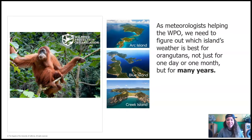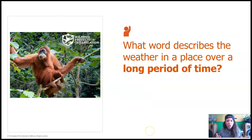Hi, welcome back. As meteorologists helping the Wildlife Protection Organization, we need to figure out which of these three islands' weather is best for orangutans, but not just for one day or one month, but for many years. That's because if the orangutans are going to live on the reserve for many years, they need to have the same type of climate year after year after year. What word describes the weather in a place over a long period of time? Do you remember?